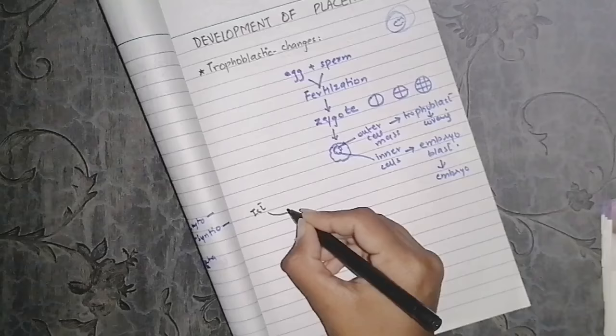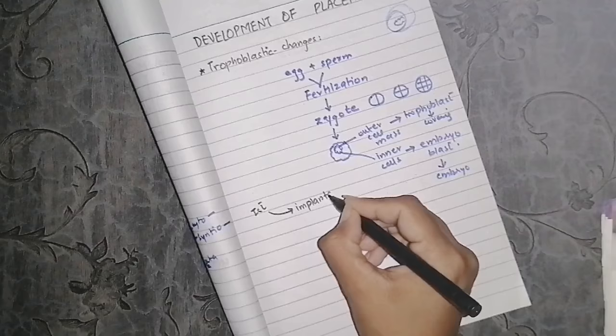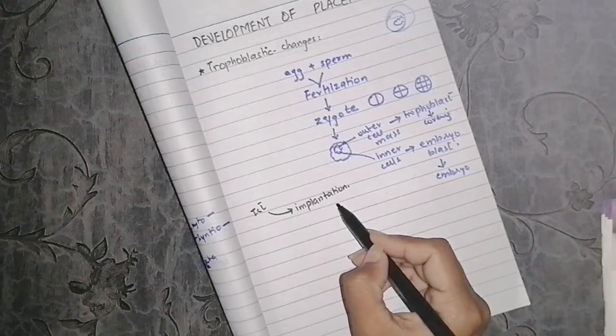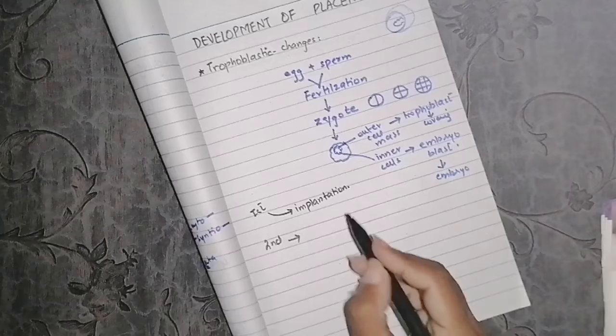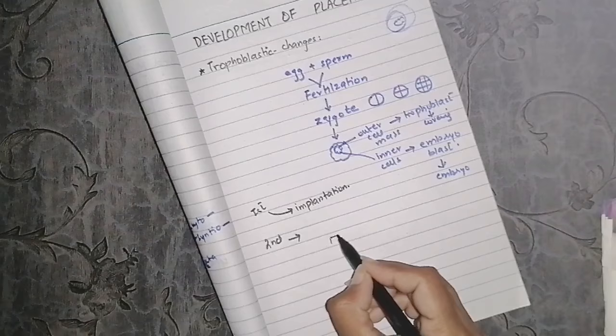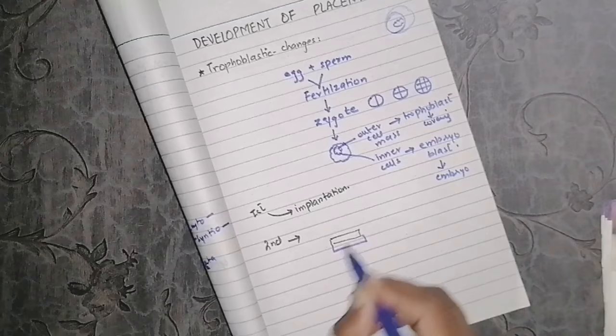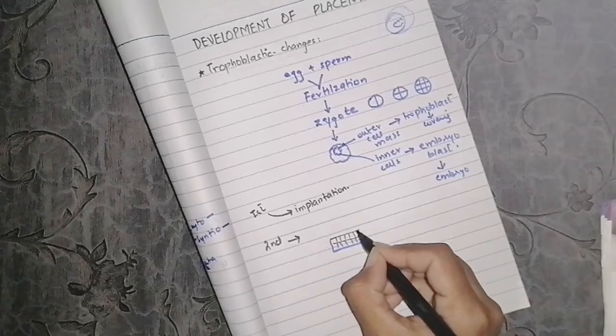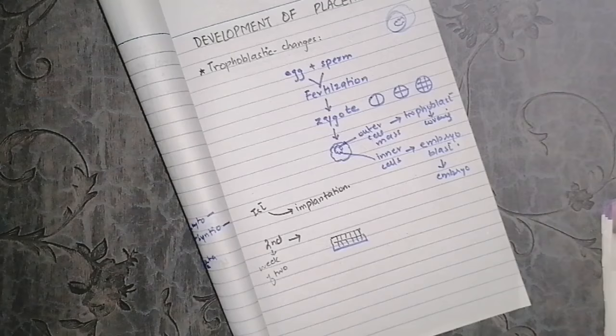First week of development: the major event is implantation. The major implantation occurs in the second week of development. In the second week, the inner cell mass organizes into two layers — we call them epiblast and hypoblast. This is why we call it the 'week of twos,' because every event involves two things. The amniotic cavity is also one of the notable structures formed.